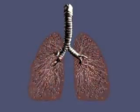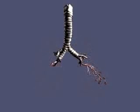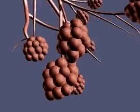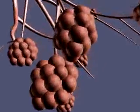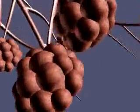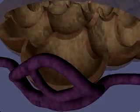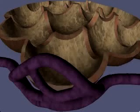Air passes through the alveolar sacs to the alveoli, where gas exchange occurs. In this cutaway view of an alveolar sac and its capillary bed, the process of gas exchange is easily observed.